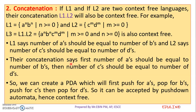The second closure property is concatenation. Concatenation combines two strings from L1 and L2 to form L1·L2. For example, L1 equals a raised to n, b raised to n, and L2 equals c raised to m, d raised to m. The number of A's and B's are the same, and the number of C's and D's are the same. The concatenation is also a context-free language.